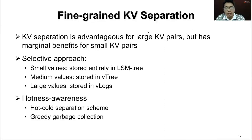Furthermore, we found that key-value separation is advantageous for large key-value pairs but has marginal benefits for small ones. We adopt a selective approach by dividing values into small, medium, and large. Small values are stored in the LSM tree. Medium values are placed in the V-tree. For large values, we build a structure called V-logs, which can be seen as a series of ordered V-tables. In V-logs, we also design a hotness-based separation scheme and a greedy garbage collection policy.